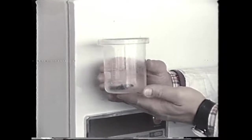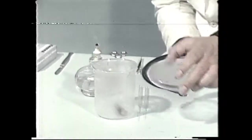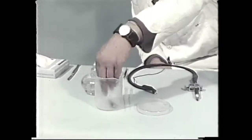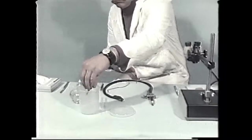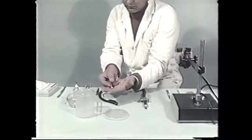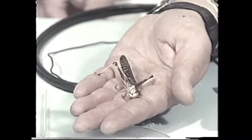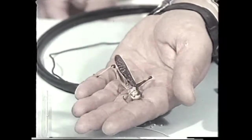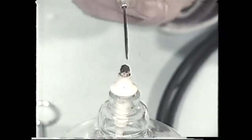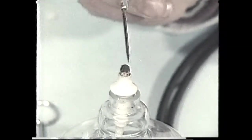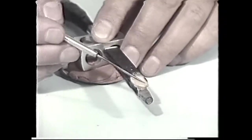A large female locust is chilled in a refrigerator so that its activity is slowed down, but it isn't killed. A mount is prepared on which the insect can be held in position for the experiment with its ventral surface uppermost. It's stuck down using melted beeswax.